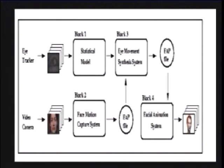This is a block diagram of our system. Eye movements recorded from a conversing subject are used to generate a statistical distribution. Saccades chosen from this distribution are then merged with facial motion capture data to generate a realistic face animation.